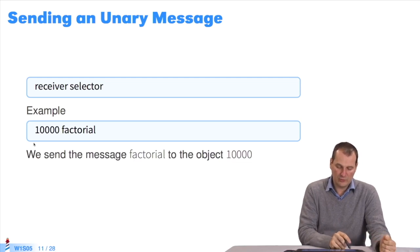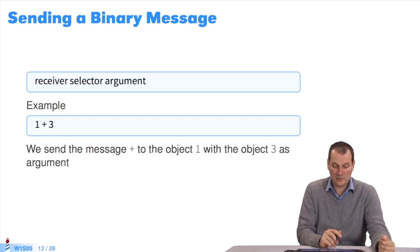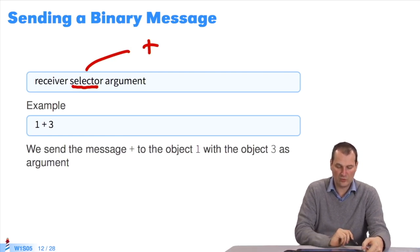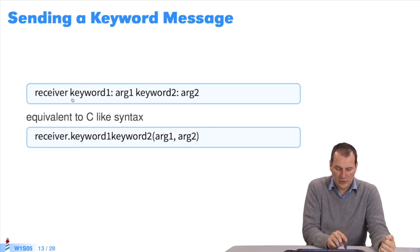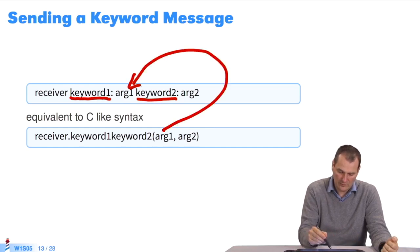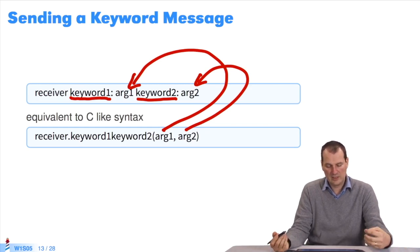This unary message: 10,000 factorial. Try it — it's a very big number. I send the message factorial to the object 10,000. There's no argument — it's a unary message. Similarly, a binary message: 1 plus 3 is a message, a binary message. The selector — the name of the method — is plus. I send the message plus to the object 1 with the object 3 as argument. A keyword message, as I explained earlier — teaching is all about repetition. I have a keyword message with keyword and keyword, which is the message with the arguments floating inside the message. The idea is to have a syntax that children can use and to have something close to English, so you can introduce the arguments inside your messages.